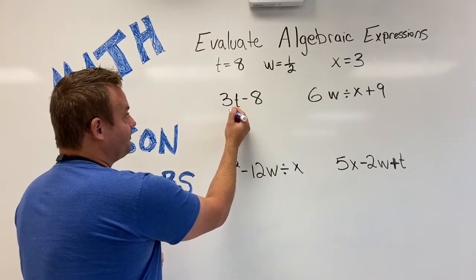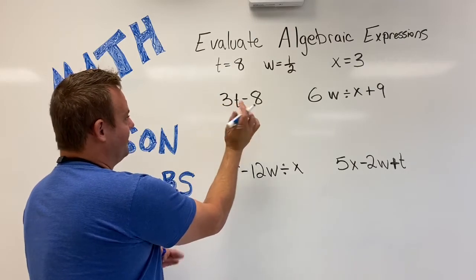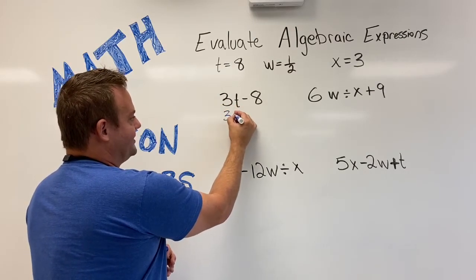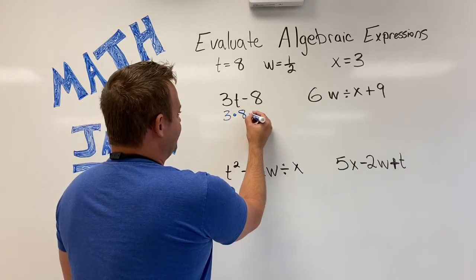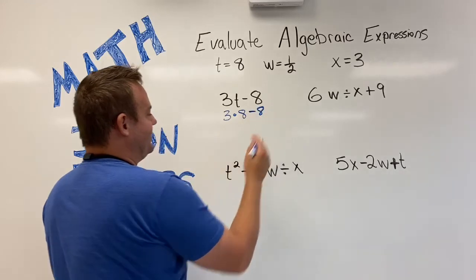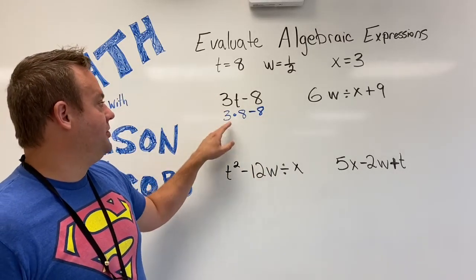So t equals 8. I'm not going to try to do, this means 3 times t. I'm not going to do 3 times 8 right away. I'm just going to keep it simple and just rewrite it numerically. 3 times 8 minus 8. So the first step, I wrote the algebraic expression numerically.